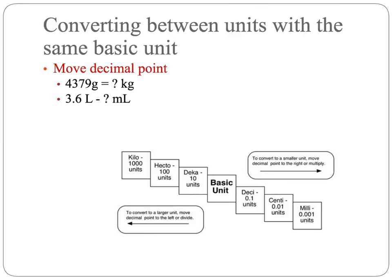All right, so let's talk about converting, getting into some of the math stuff that everybody just loves about chemistry. Again, as we just already talked about, when you're converting between units with the same basic unit, then all you have to do is move the decimal point. And since I just did this for you, you should be very quickly be able to think, okay, if I'm going from grams to kilograms, I'm moving up the staircase one, two, three, so that means we've got 4.379 kilograms in 4,379 grams.